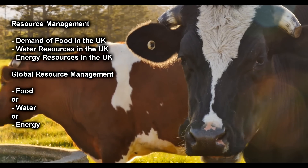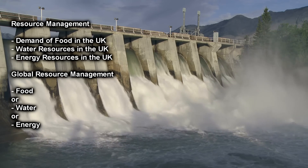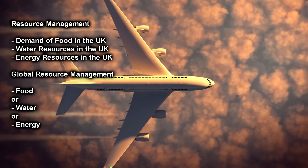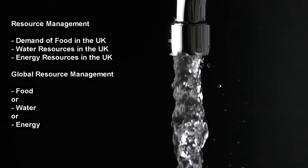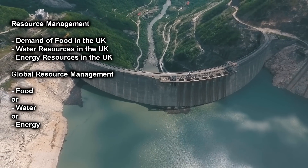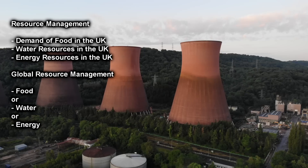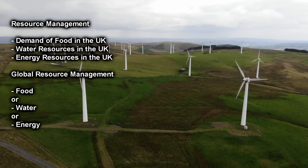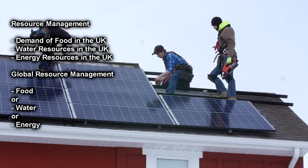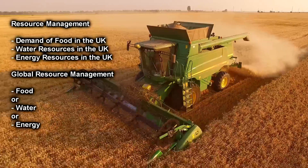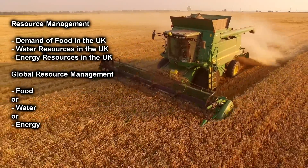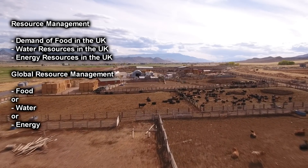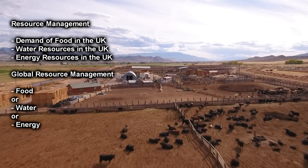For the generic section, you need a basic understanding of how demand for food has changed in the UK, including food miles and carbon footprint. When looking at water, you may consider changes in water demand, areas of deficit and surplus, and water transfer schemes. For energy, you need to recognise changes in demand, where our energy comes from, and how we're trying to change the energy mix across the UK. The optional sections on food, water or energy will include questions on rising demand for these resources around the world, how this can lead to conflict, and possible strategies to combat these challenges.